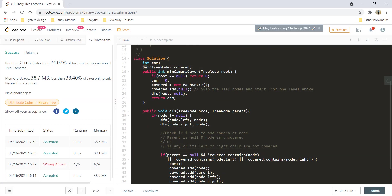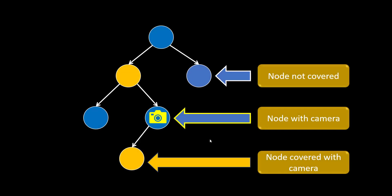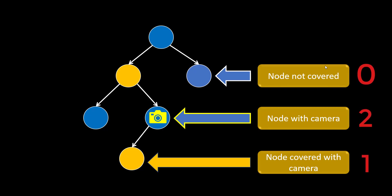Now let's see if we can do this without using a set. In a tree, at any time a node can have one of three states: it is not covered by any camera (0), it is covered by a camera but doesn't have one itself (1), or it has a camera (2). These three states can be returned and used to decide whether to place a camera. We mark states as 0, 1, and 2 — 2 means has camera, 1 means covered by a camera, 0 means not covered.